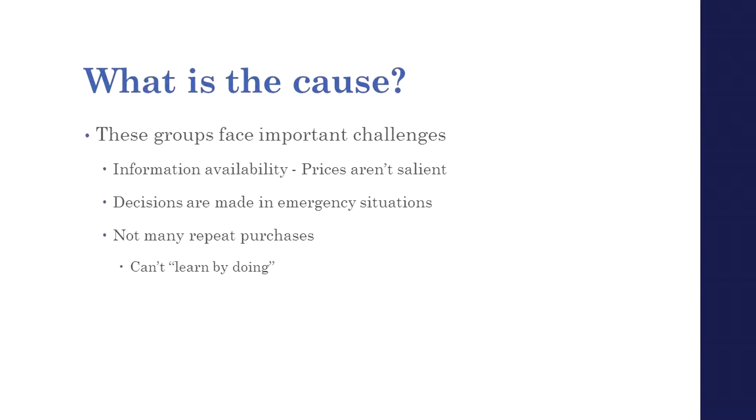I think the outcome we're seeing isn't actually reflective of people's true preferences. And I want to stop here and say: this is the key first step when you think about regulation. It's not that it's unfair or that it feels wrong. It's that there's some reason why the outcome we're seeing isn't at an efficient equilibrium — people somehow aren't making the choices they ought to be making.